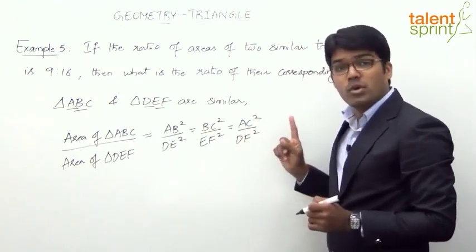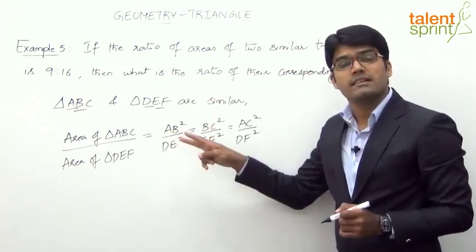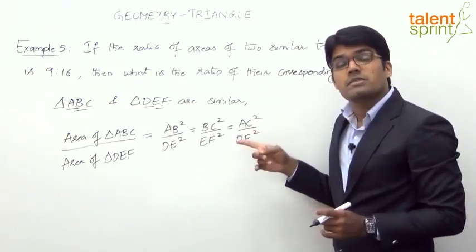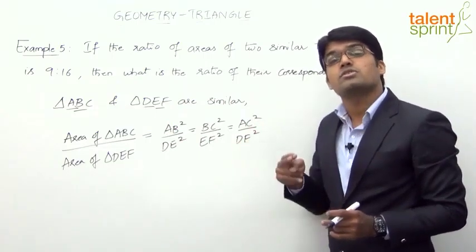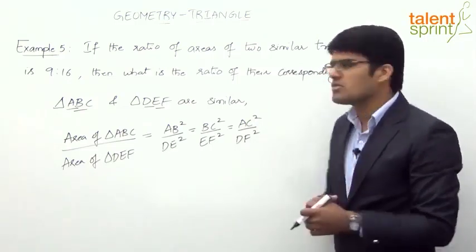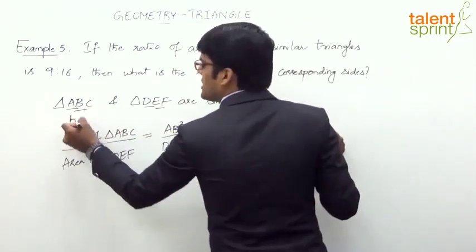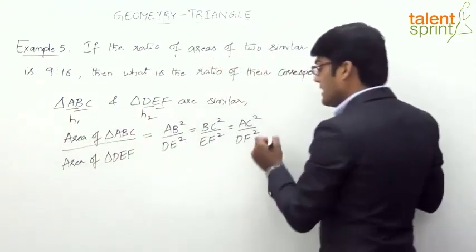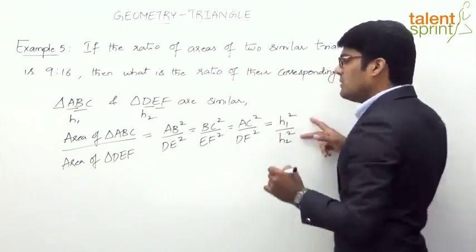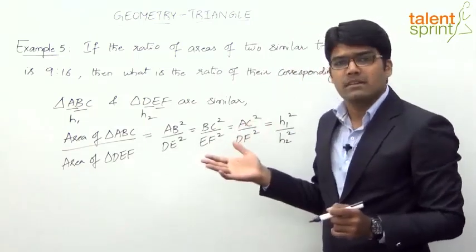And not just sides — the ratio of the areas of two similar triangles is equal to not only the ratio of the squares of their corresponding sides, but also the ratio of the squares of their altitudes. So if the heights of the two triangles are H1 and H2, then H1 squared by H2 squared will also be equal to the ratio of their areas.